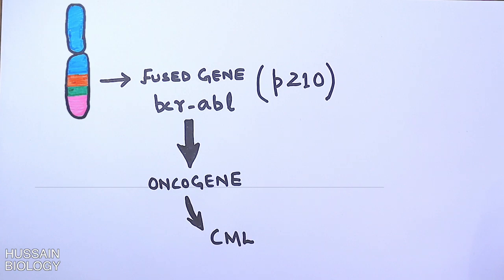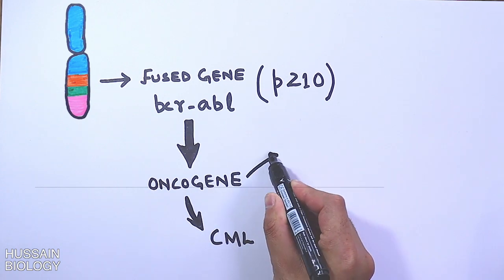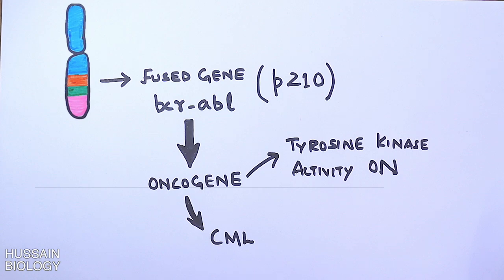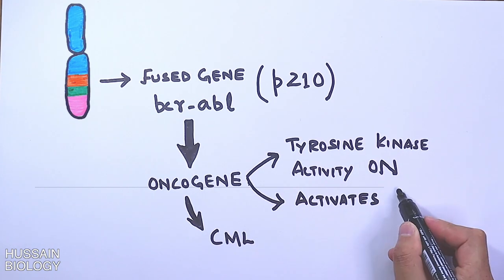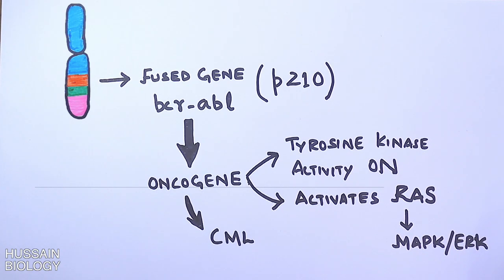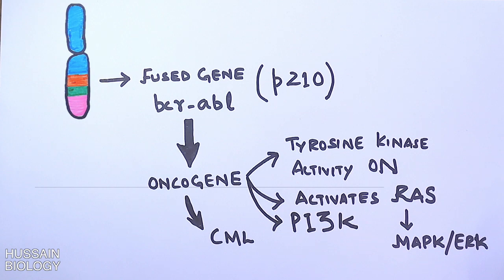The BCR-ABL oncogene permanently turns on the tyrosine kinase activity of ABL. This oncogene also activates the RAS pathway, which in turn activates the ERK/MAPK pathway, and the PI3K pathway is also activated. All these pathways lead to cell division without regulation, eventually causing cell transformation that leads to CML. But let's see how the BCR-ABL fused gene becomes an oncogene and turns these pathways permanently on.